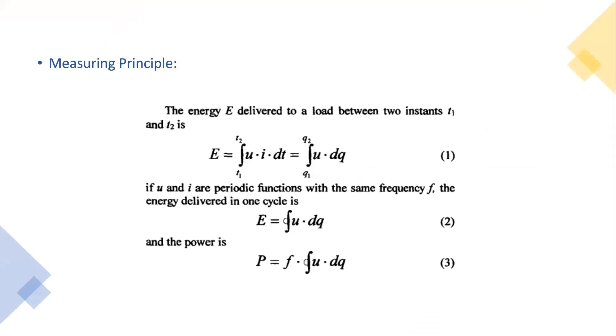The energy E delivered to a load between two instants t1 and t2 is E equal to the integration from t1 to t2 of u times i dt. If u and i are periodic functions with the same frequency f, the energy delivered in one cycle is E equal to the integration of u into dq.